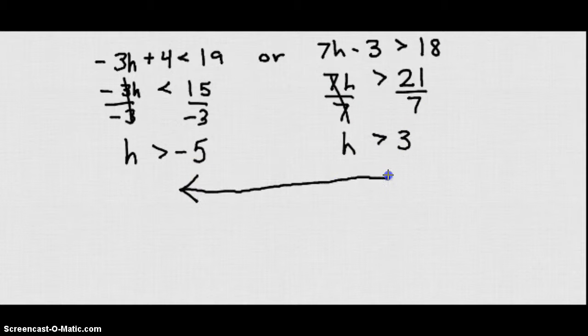So on a number line we see we have negative 5, negative 4, negative 3, negative 2, negative 1, 0, 1, 2, 3. H is greater than negative 5. H is also greater than 3.